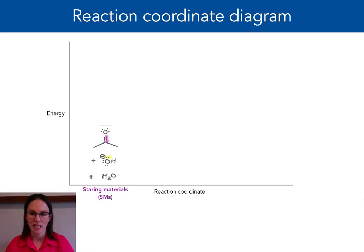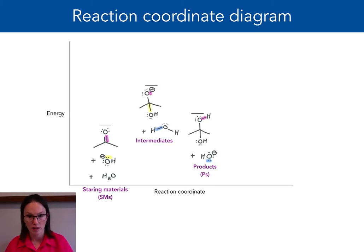The starting materials are placed on the left of the RCD by convention. The intermediates are higher in energy than the starting materials and products. Each reaction step goes through a higher energy point, called the transition state.